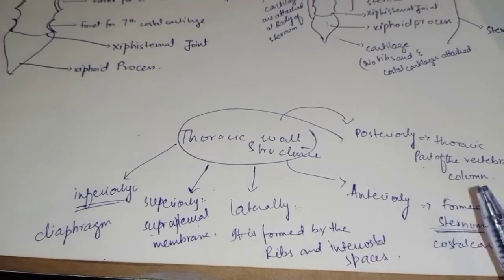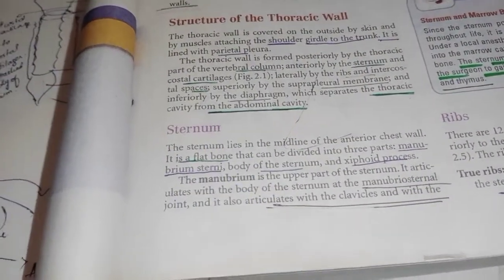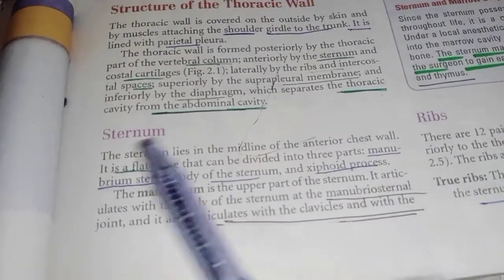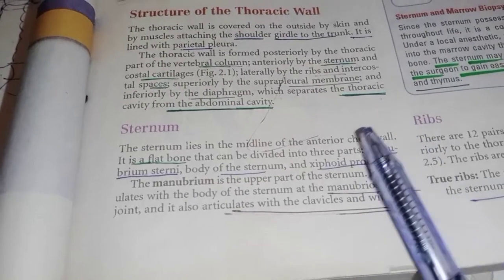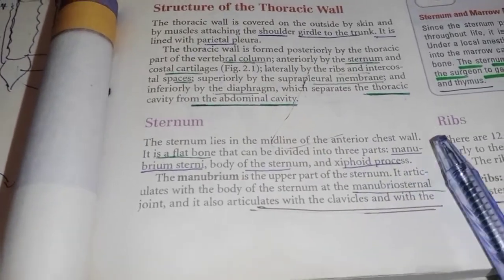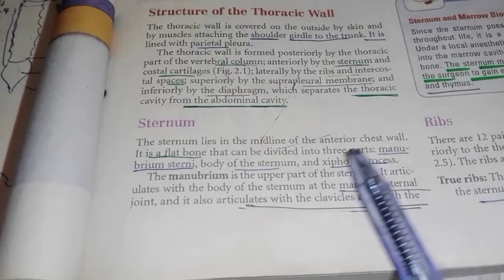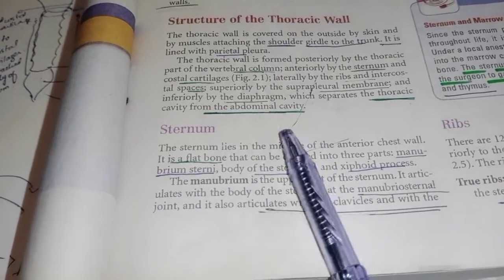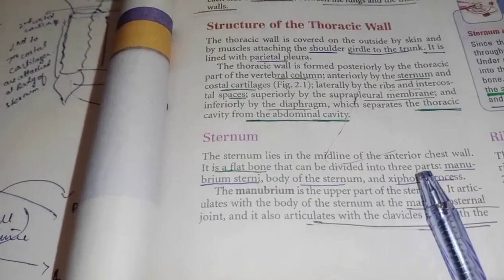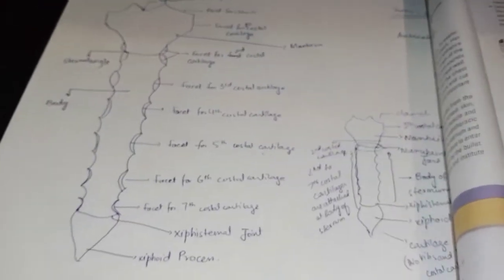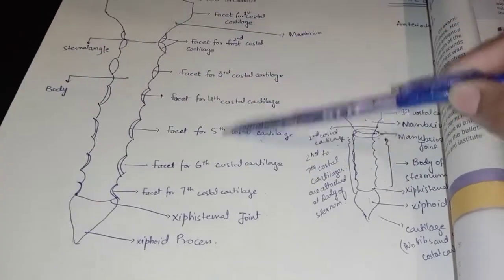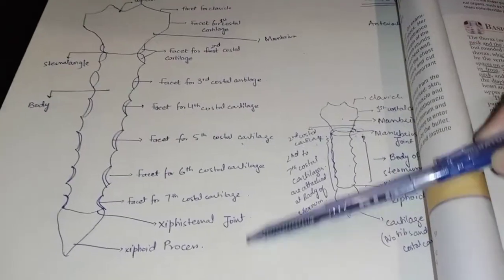Now the main topic is the sternum. The sternum is a flat bone located in the midline of the anterior chest wall. It is divided into three parts: the first part is the manubrium, the second is the body of the sternum, and the third is the xiphoid process.